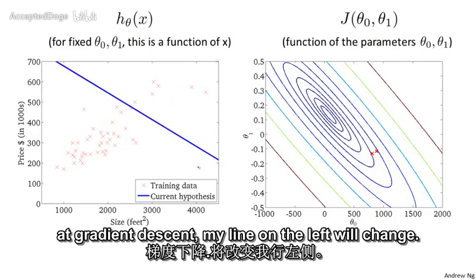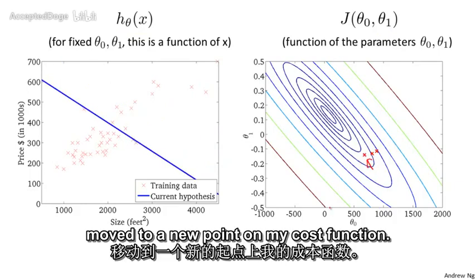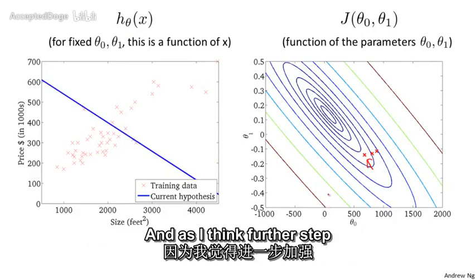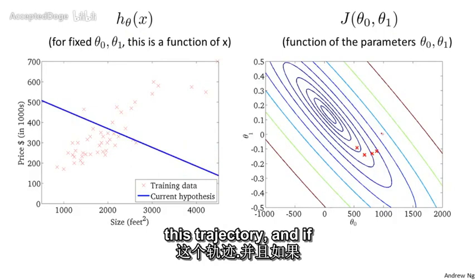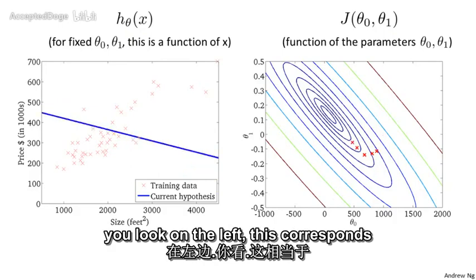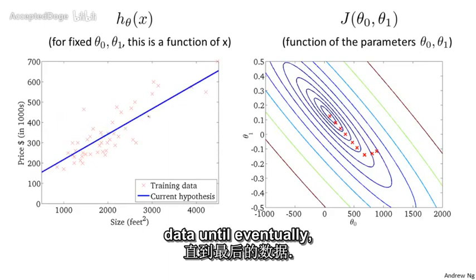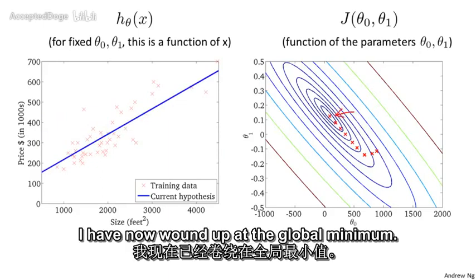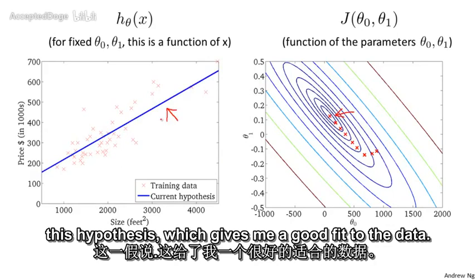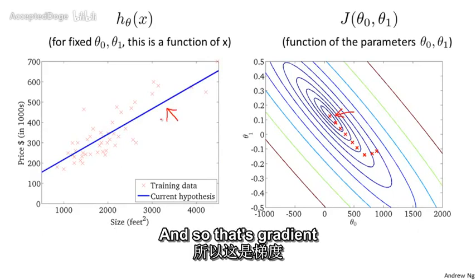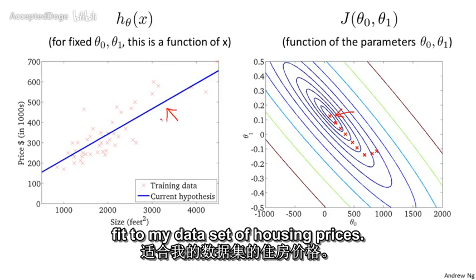As I take another step of gradient descent, my line on the left will change, and I've also moved to a new point on my cost function. As I take further steps of gradient descent, I'm going down in cost, so my parameters are following this trajectory. And if you look on the left, this corresponds to hypotheses that seem to be getting to be better and better fits to the data. Until eventually I've wound up at the global minimum, and this global minimum corresponds to a hypothesis that gives me a good fit to the data.